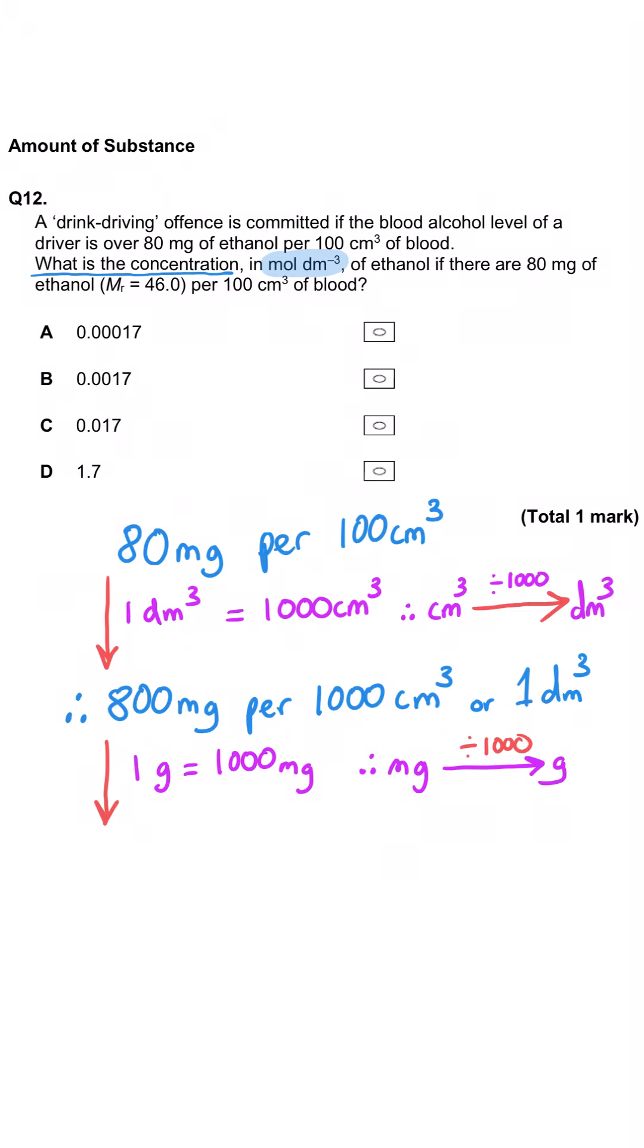Then we need to turn that into moles. We need to turn 800 milligrams into grams, so that is 0.8 grams. We're told the MR of ethanol is 46. We divide 0.8 grams by 46 and we get 0.017 moles. Therefore we have C, 0.017 moles per decimetre cubed of blood.